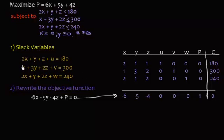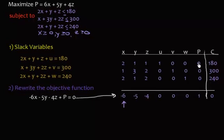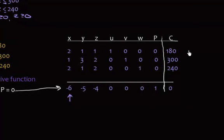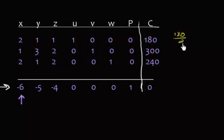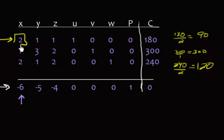Step 3 would be to find the most negative entry in our last row, which would be the negative 6. So this is going to be our pivot column. We now have to figure out what is our pivot row. We're going to divide the constant, so like 180, divided by 2, the corresponding entry in the pivot column, that gets me 90. Then you do 300 divided by 1, that's 300, and then 240 divided by 2, that's 120. Which one is the smallest ratio? It would be the 90, so this would be my pivot row.